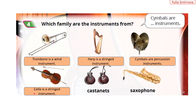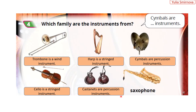Cello is a stringed instrument – віолончель є струнним інструментом. Castanets are percussion instruments – кастанеты ударні інструменты. Saxophone is a wind instrument – саксофон це духовий інструмент.